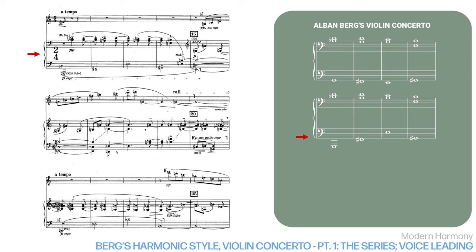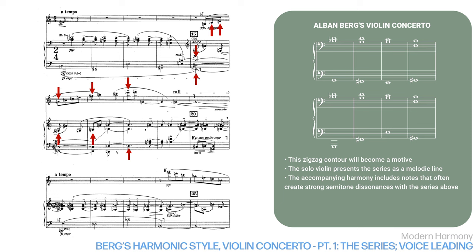But note how the bass line is presented as a series of leaps. This zigzag contour would become a motive, and it's used repeatedly in the coming measures. After this, the solo violin presents the series as a melodic line in measures 15 to 18. But the accompanying harmony includes notes that often create strong semitone dissonances with the series above. In fact, the accompanying line, played by muted horn, is a compound line with semitone voice leading in each register.